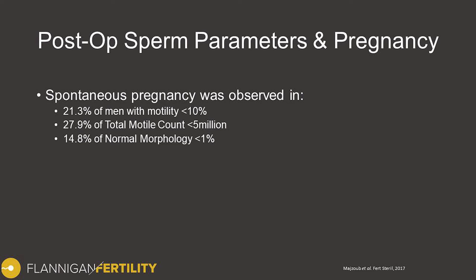And with normal morphology less than 1% — we like to see 4% or better in the general population — about 15% of couples have a spontaneous pregnancy.